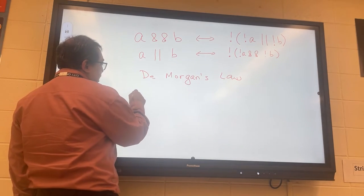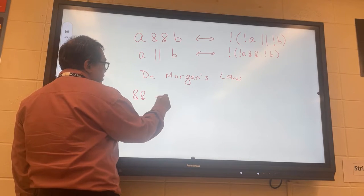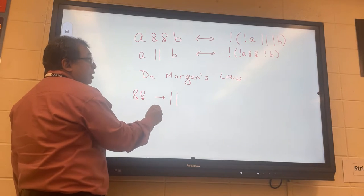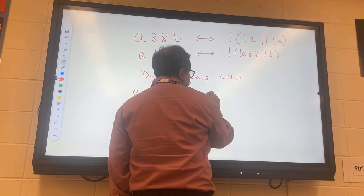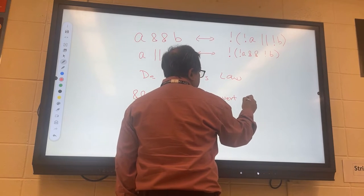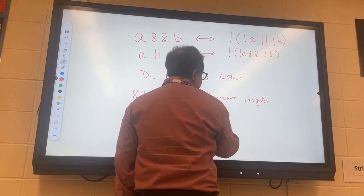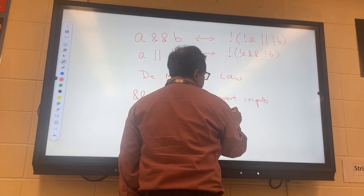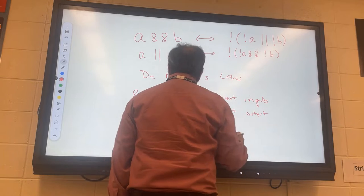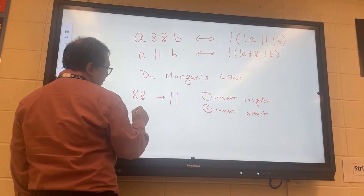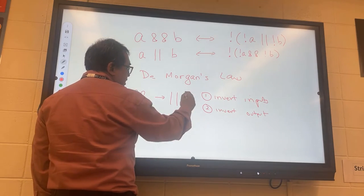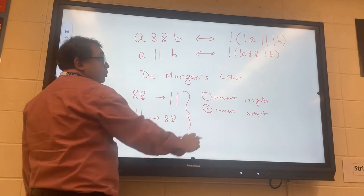Simply, we can state De Morgan's Law as the following: we can change an AND expression to an OR expression if we do two things—we have to invert the inputs and we have to invert the output. Likewise, we can also change an OR into an AND expression using exactly the same set of rules.